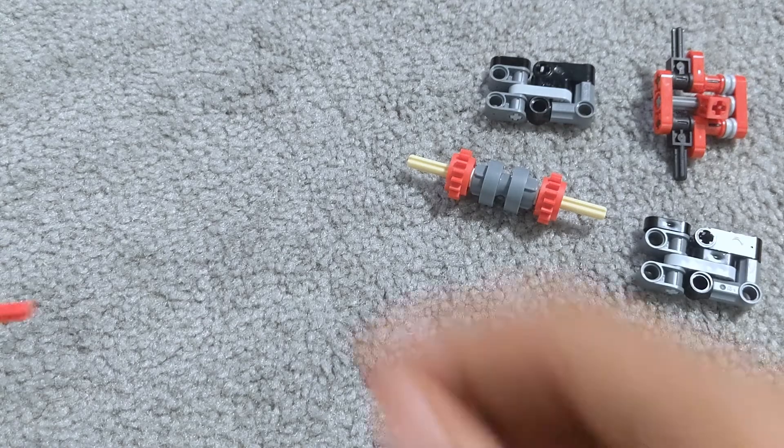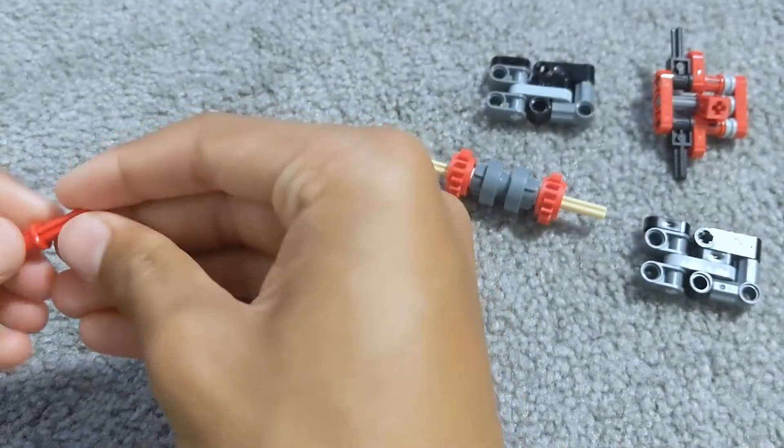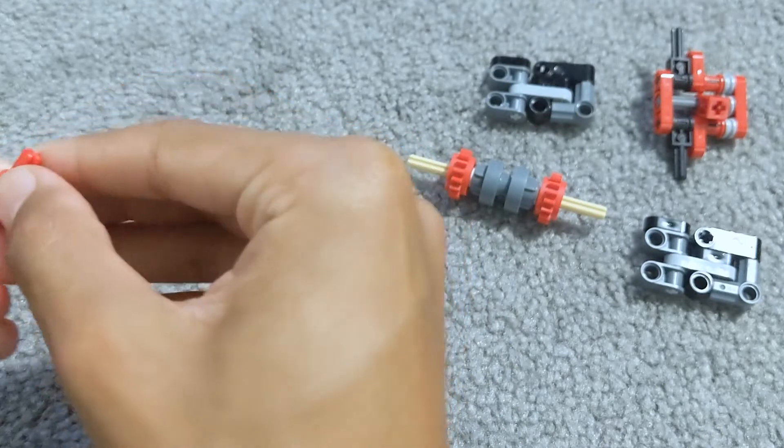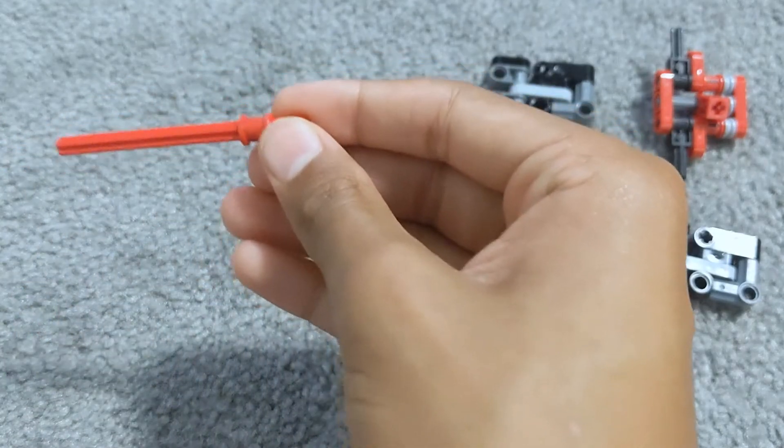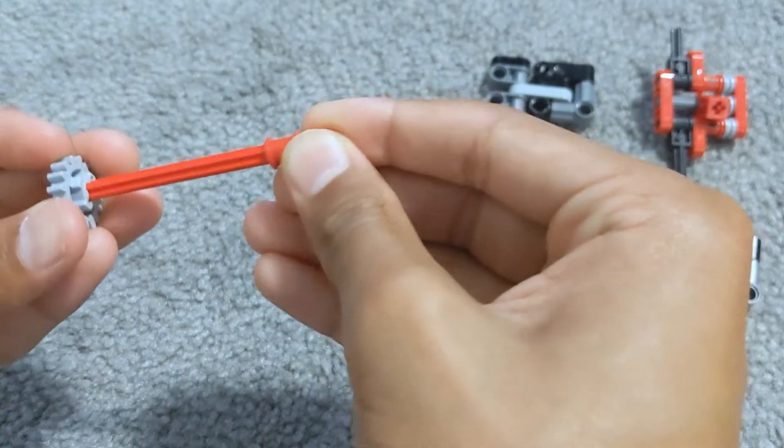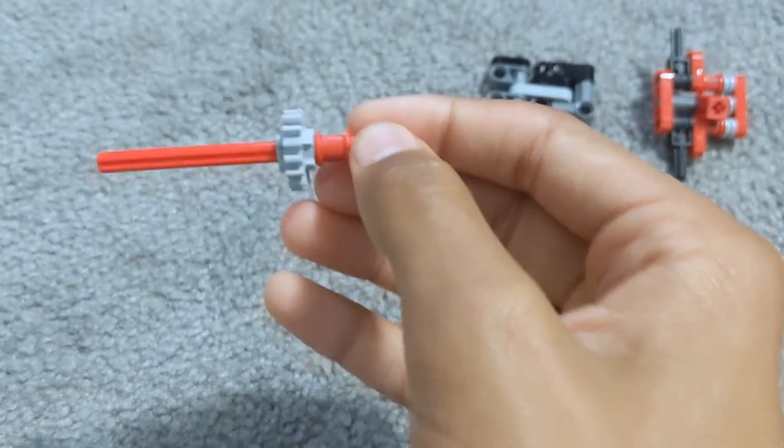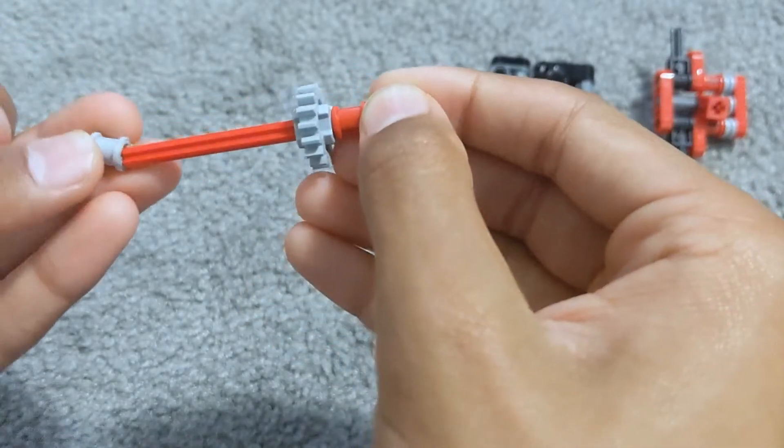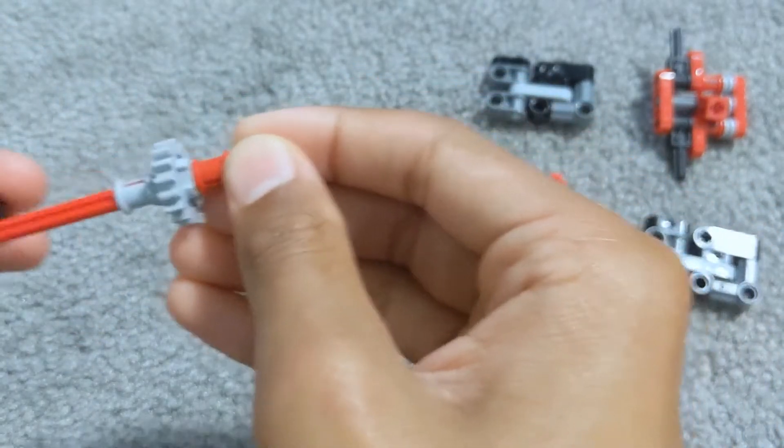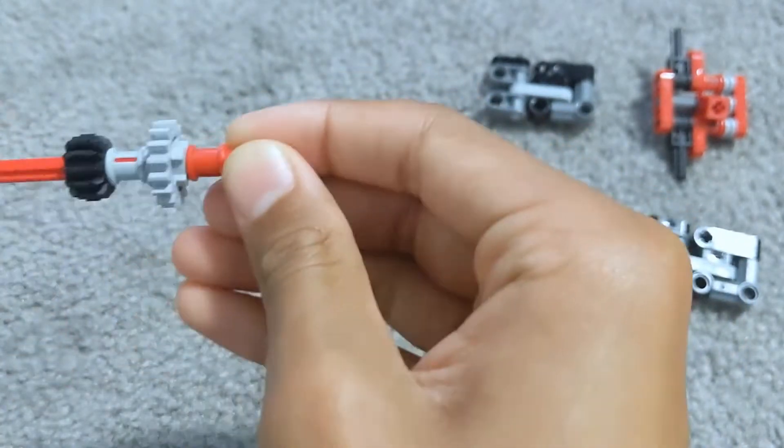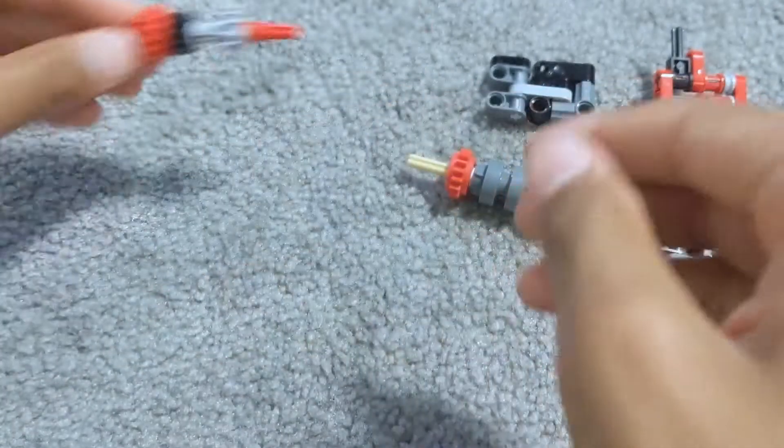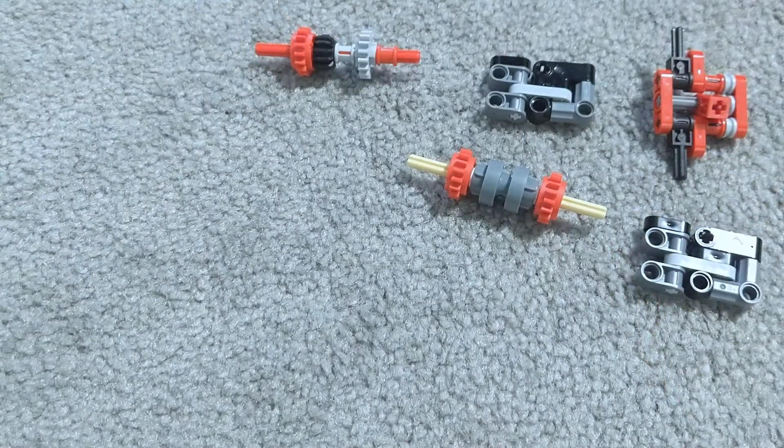Now for this one, you get this, put this about one block away from the end. Then you get this and put it there, then this here, then here, and then here. Put that to the side.